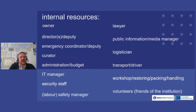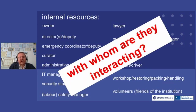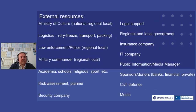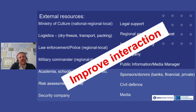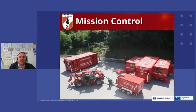We have seen a list of our internal resources — now, with whom are they interacting, and how can we improve that interaction for better performance? The same applies to external resources: how can we improve interaction so that in case of emergency, the performance is the best possible?